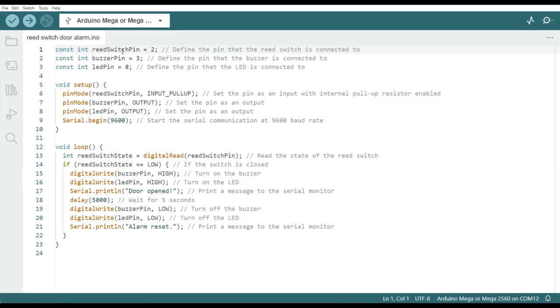We're going to put the reed switch pin on pin 2 of our Arduino. We're going to put a buzzer pin at pin 3, and we're going to connect an LED to pin 8. In the setup, we're going to set our reed switch pin, which is pin 2, as an input with an internal pull-up resistor.